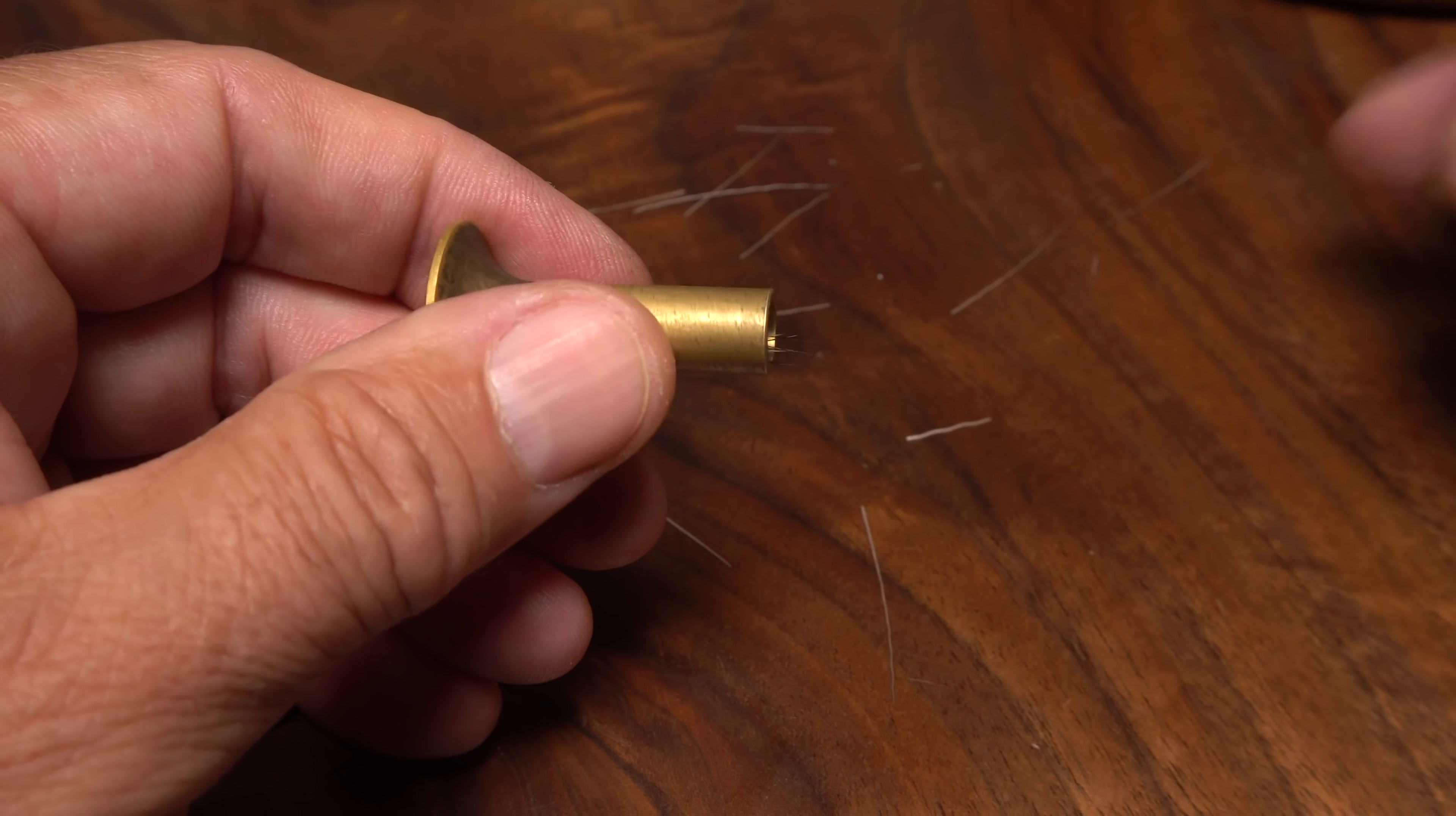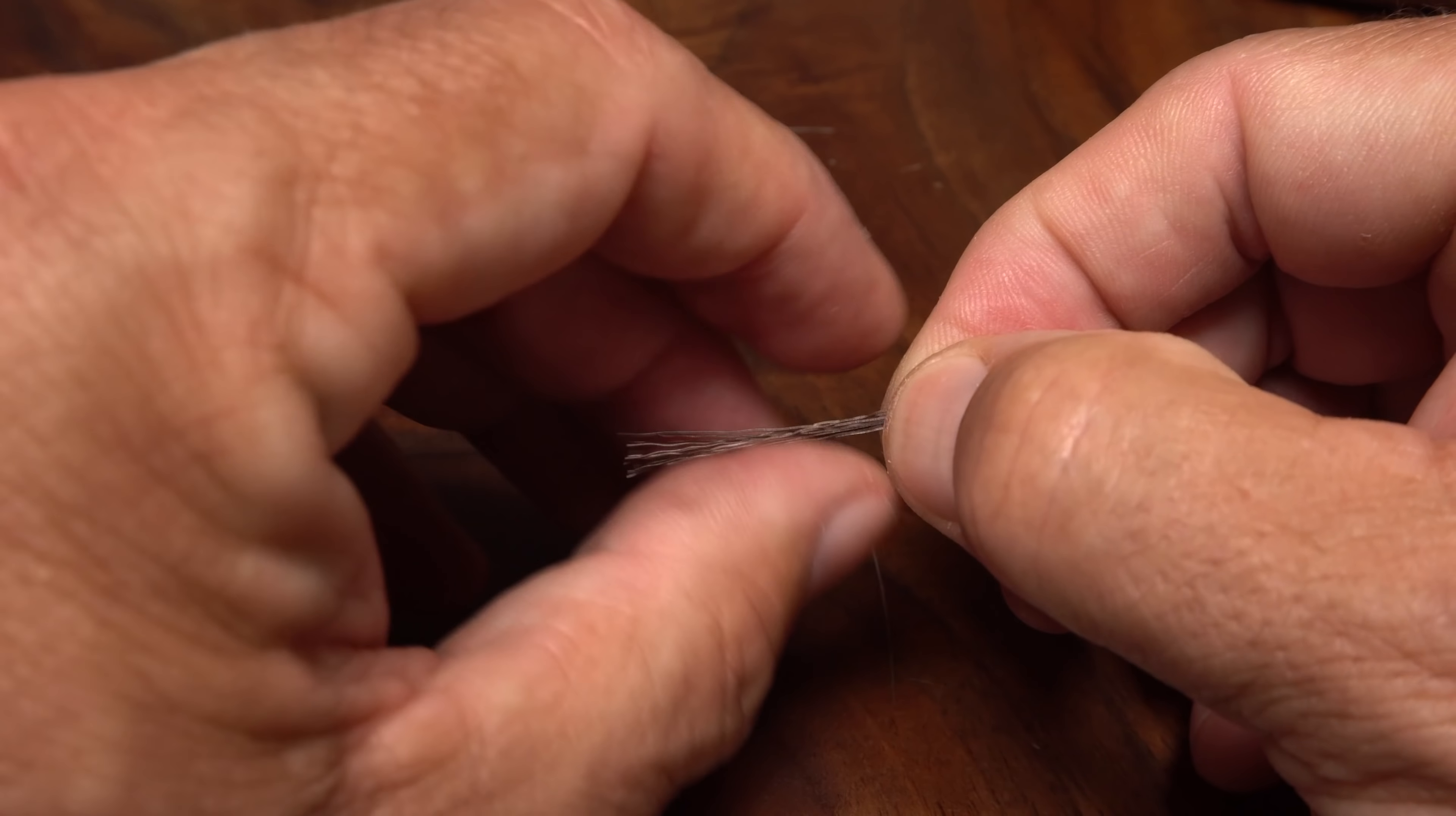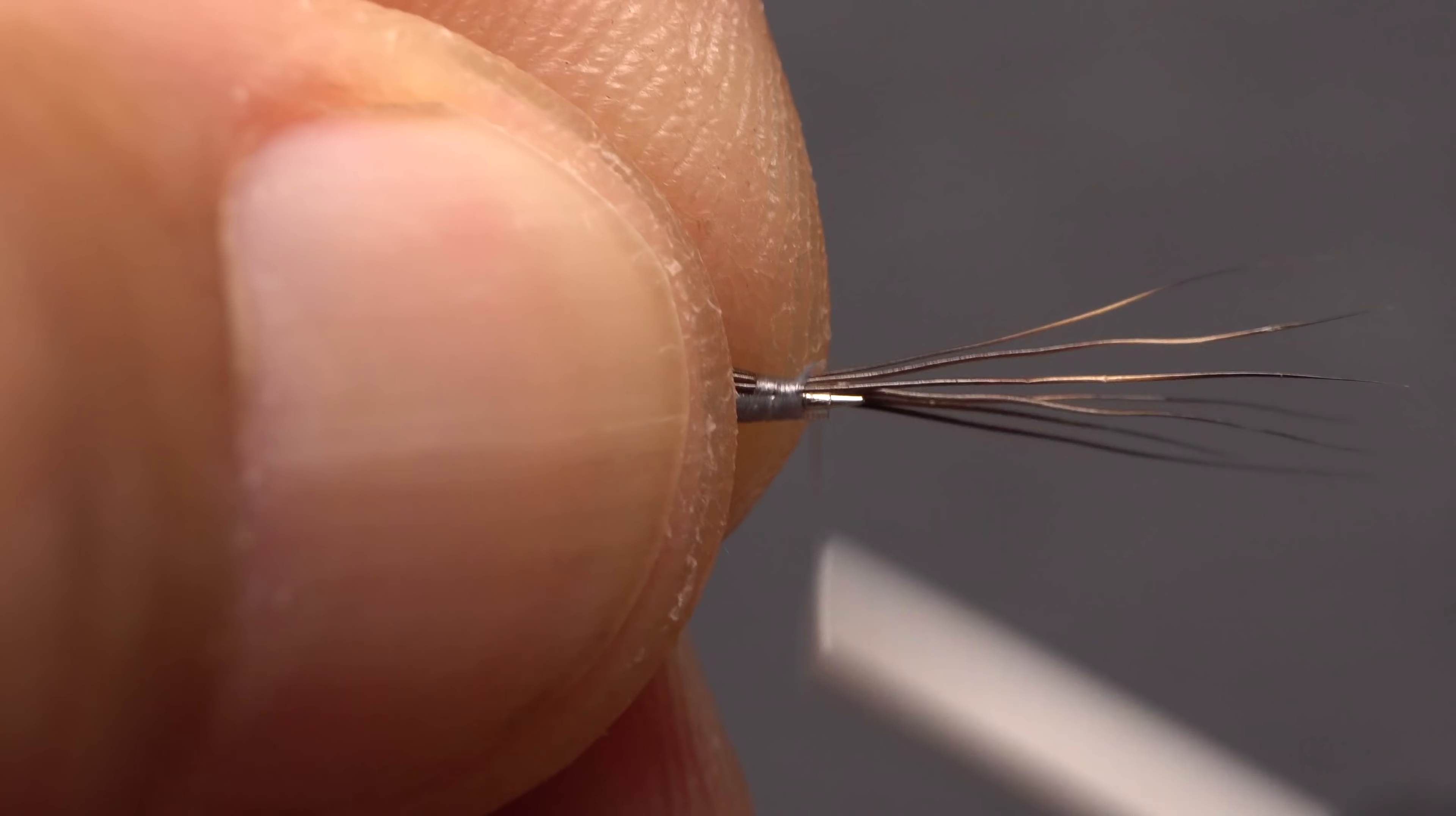Open the stacker and retrieve the hair by the aligned tips with the fingers of your right hand, then pass the clump to your left. Measure to form a tail about the same length as the tubing, then start anchoring the hair with wraps of tying thread.